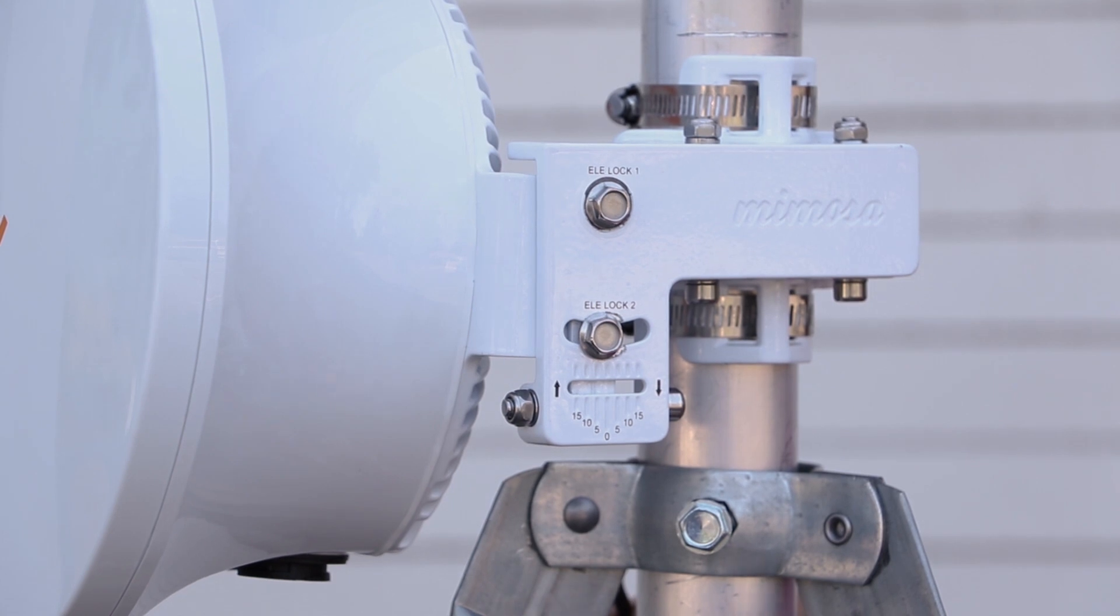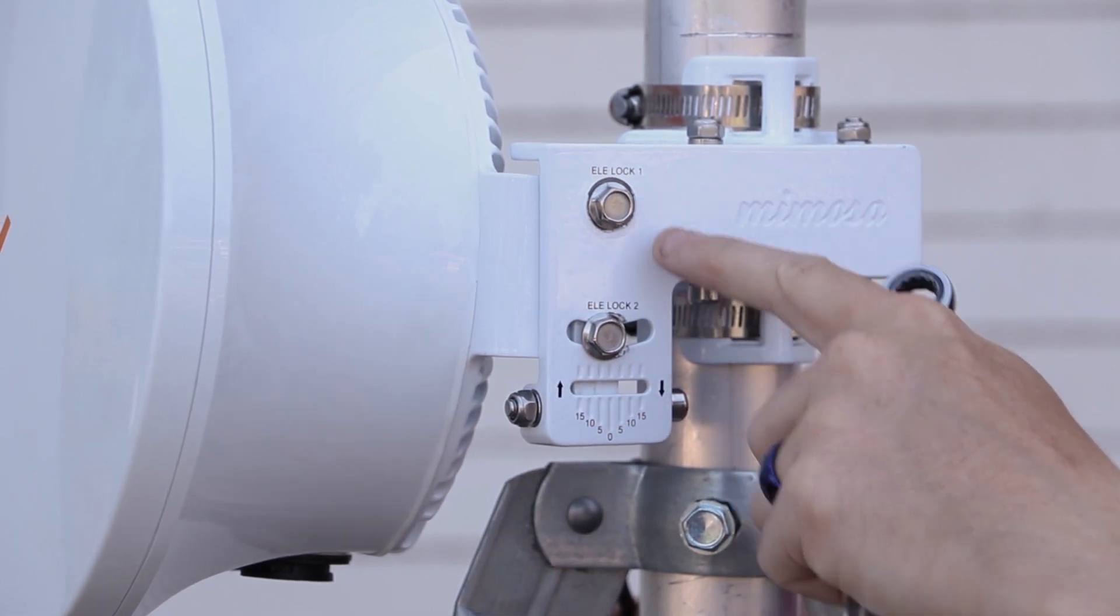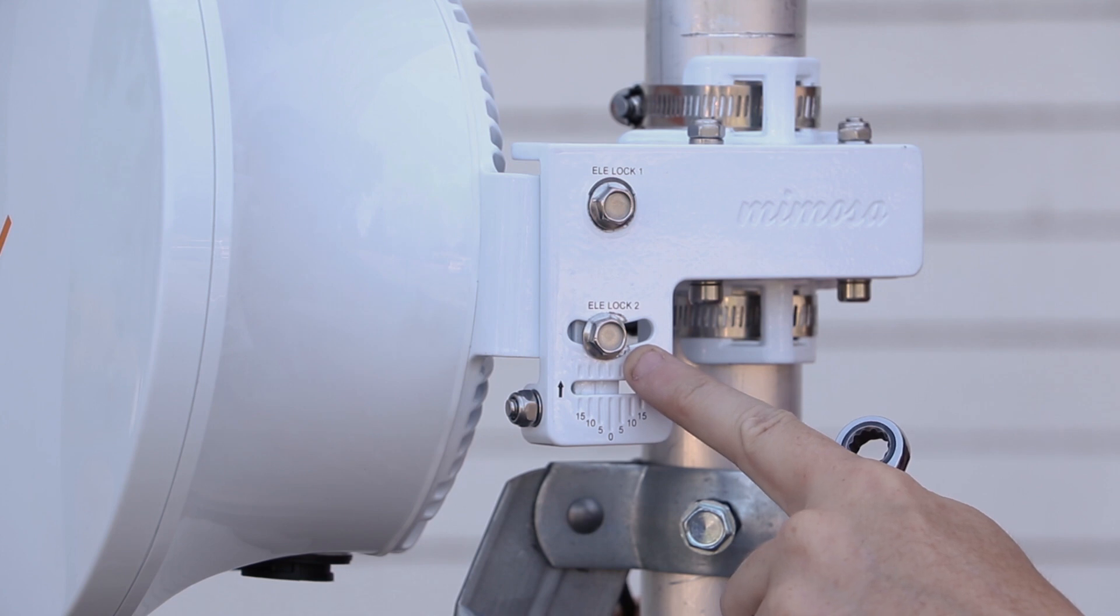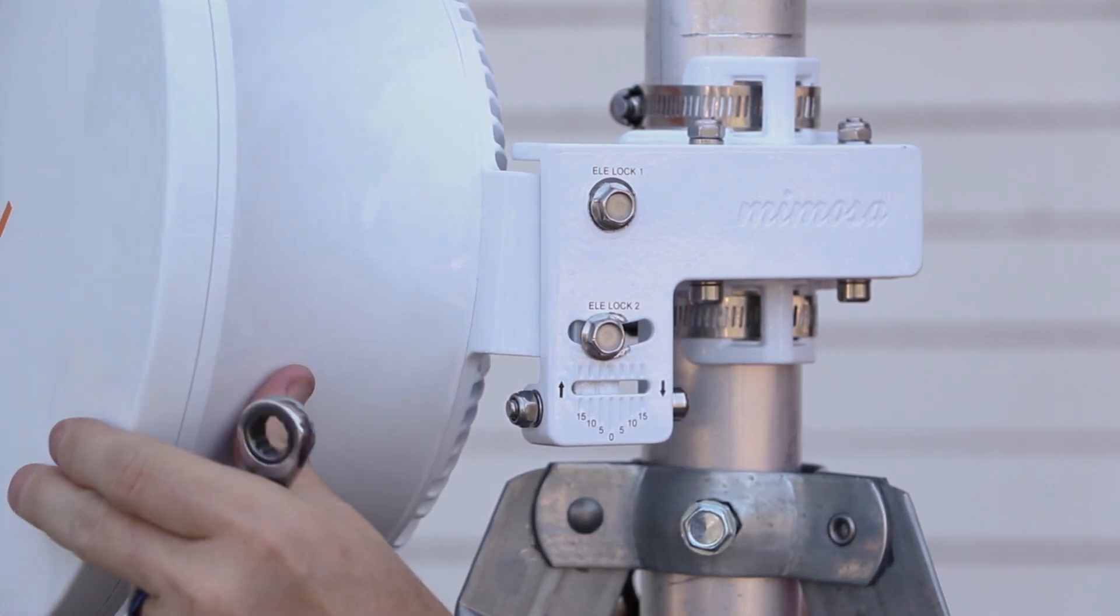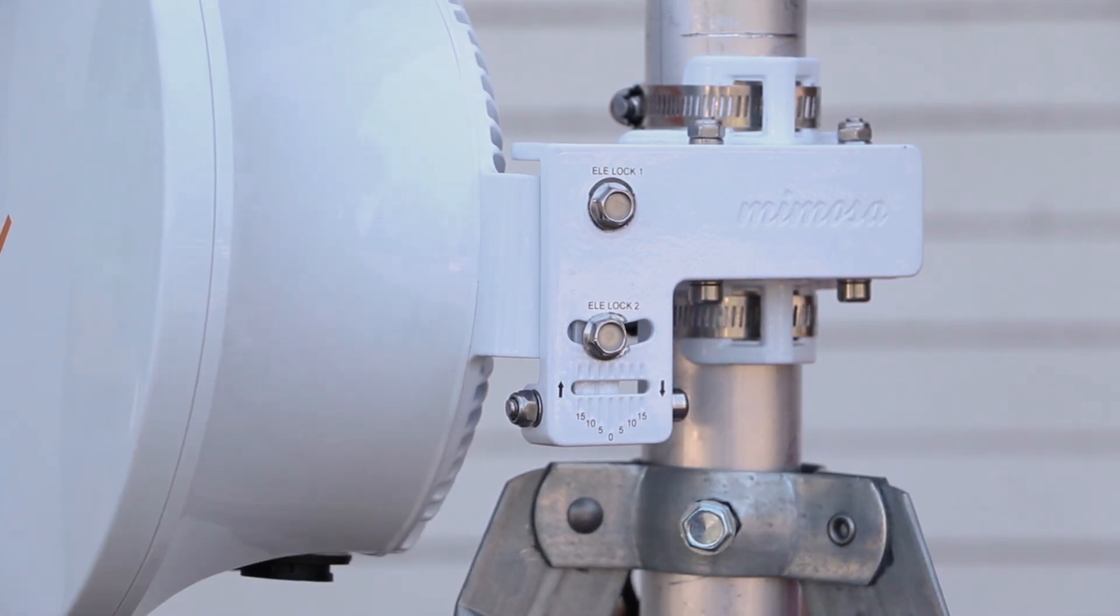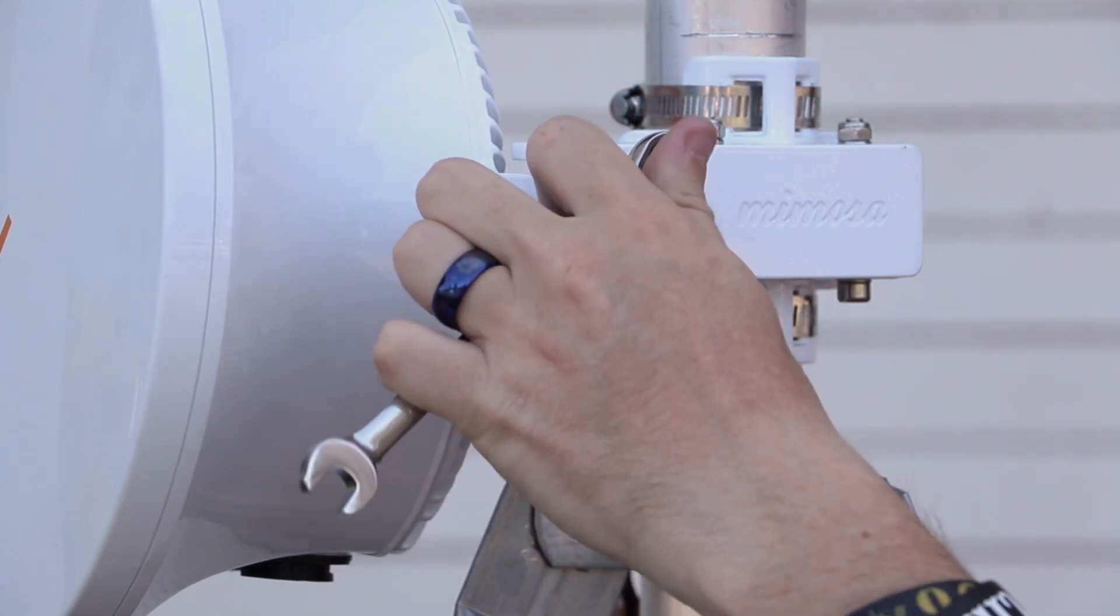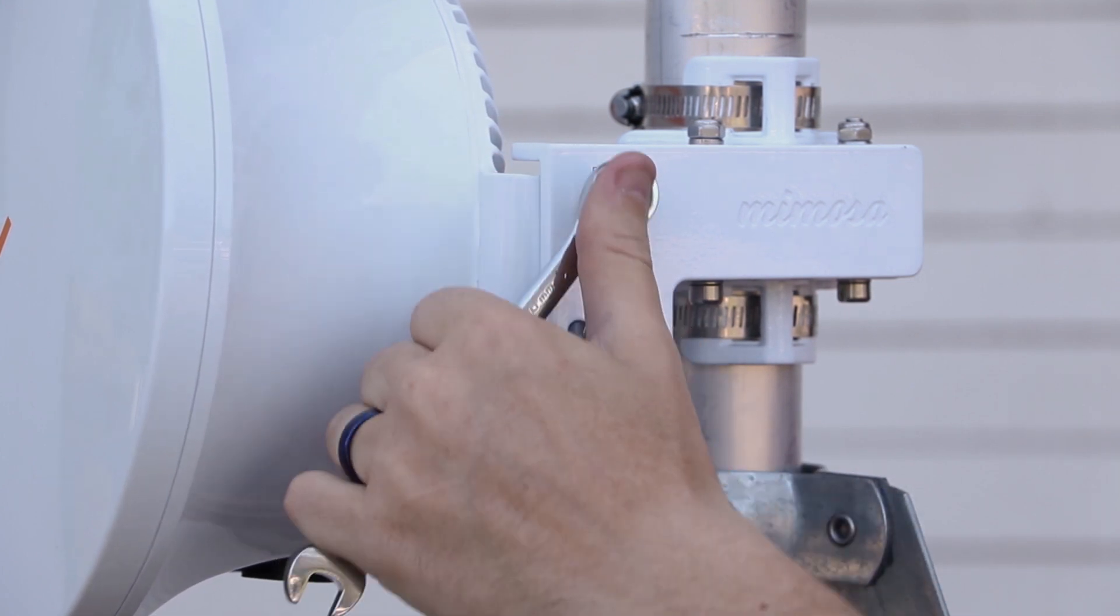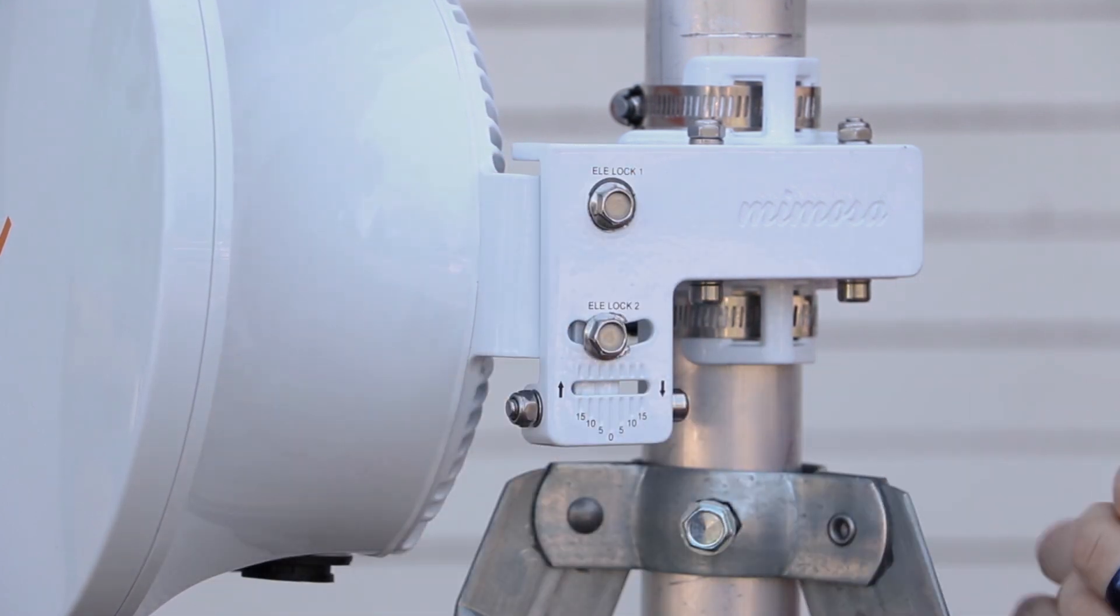And one more thing, LE lock one and LE lock two. If you wrench these down really hard, it's going to move your radio. It's going to throw it off maybe 10 dB depending on how short or long distance it is. So I'm going to loosen these up here just a little bit, just enough where I can adjust the elevation.